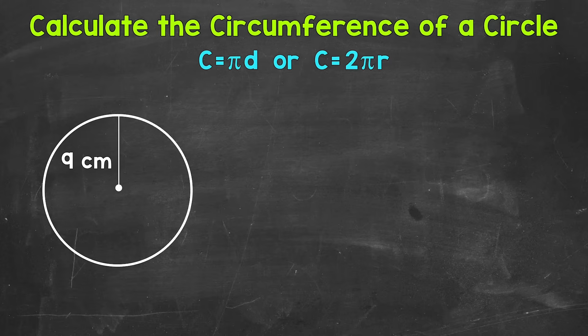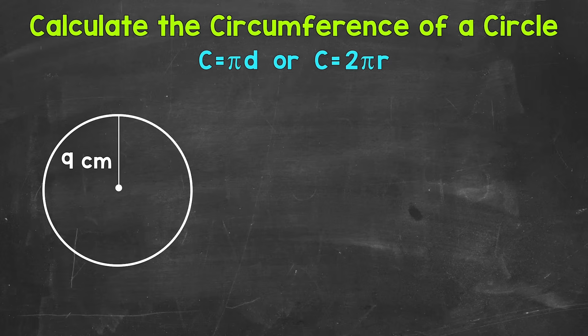Remember, the diameter is twice the radius, so that's why we multiply by 2 with the formula that includes the radius. One more thing to keep in mind before jumping into our example, and that is pi. Pi is the same for all circles — it's a constant. Pi is the ratio of a circle's circumference to its diameter, so it's the circumference of a circle divided by its diameter.